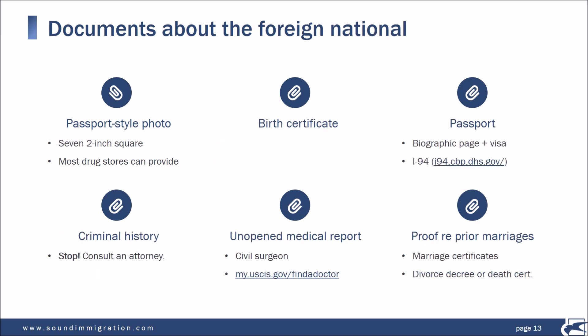Let's talk about the documents filed by the foreign national. Like the U.S. petitioner, she's going to file passport-style photographs, except that because she has multiple applications, you file a total of seven passport-style photographs. The foreign national provides a copy of her birth certificate. It used to be required to file an entire copy of every single page of the passport, but under current standards it's okay just to provide the biographical page — that's the page with her photograph — and you'll also want to include a copy of the visa page.